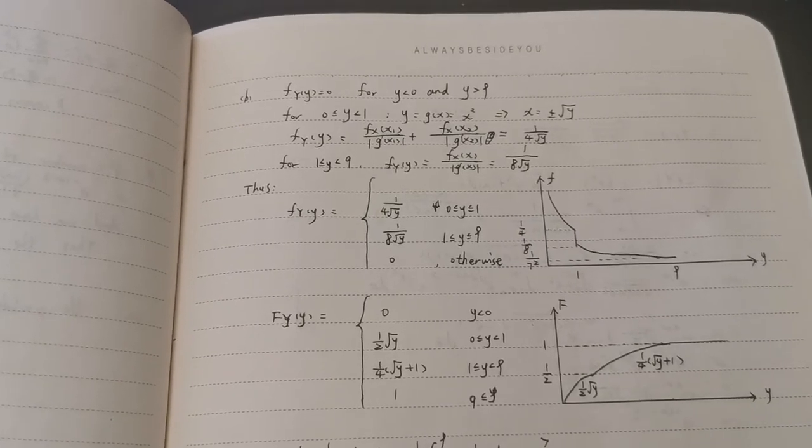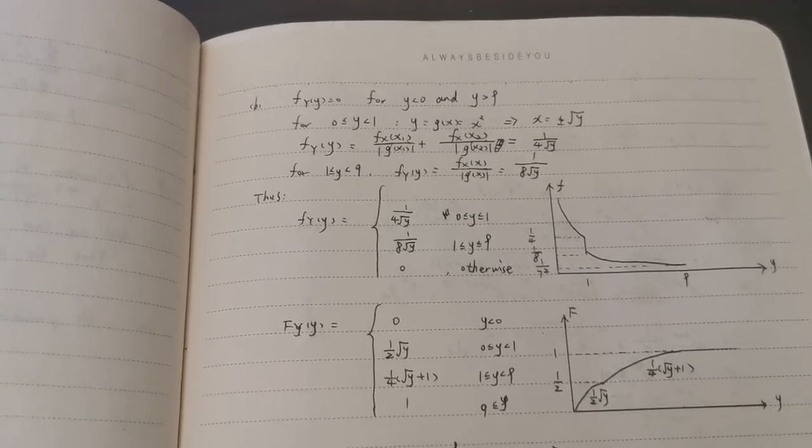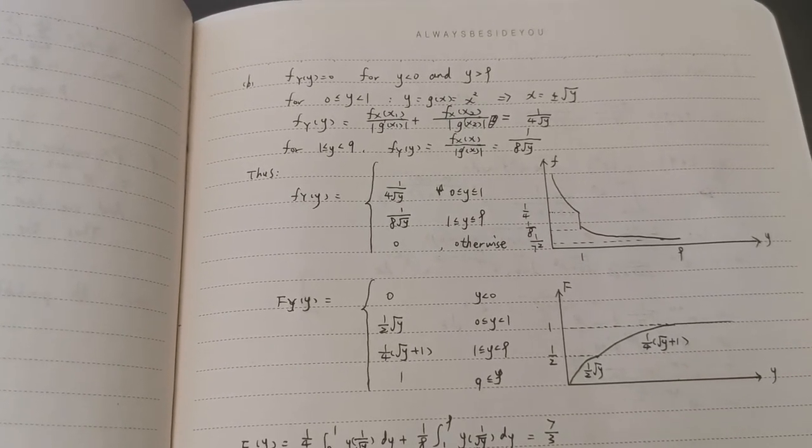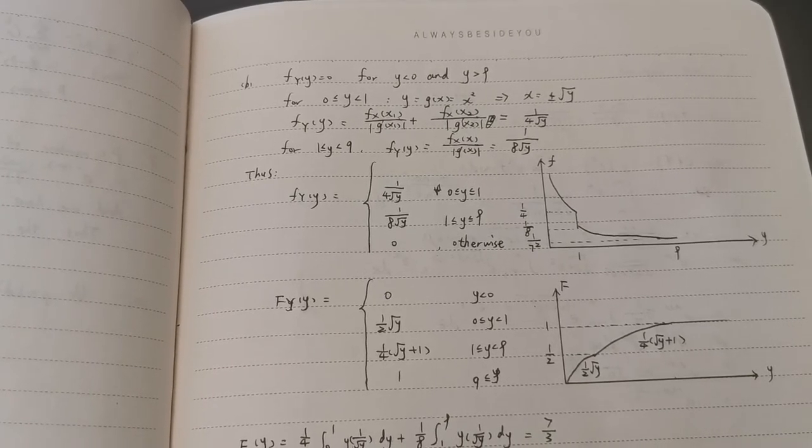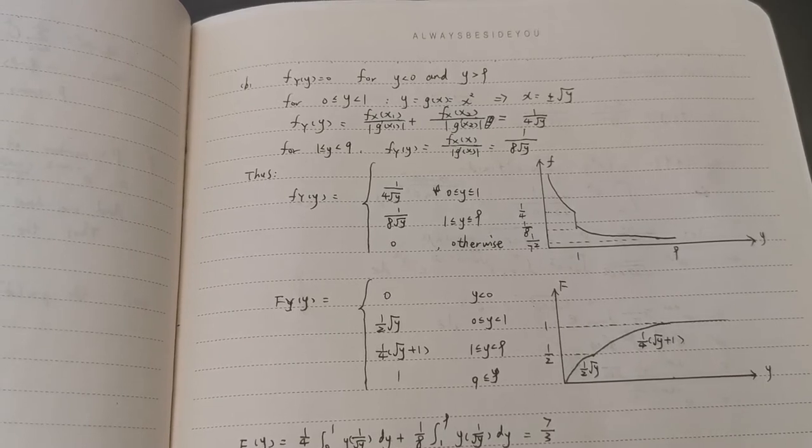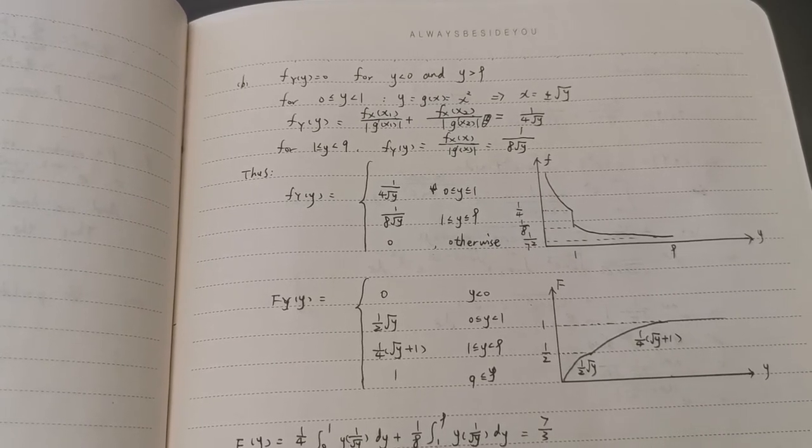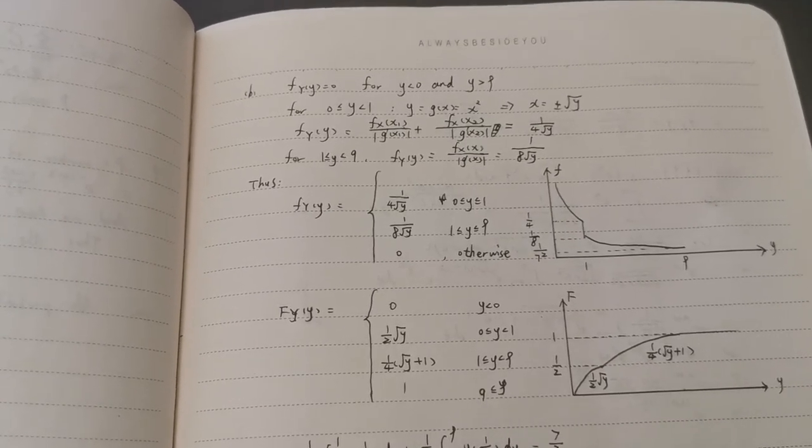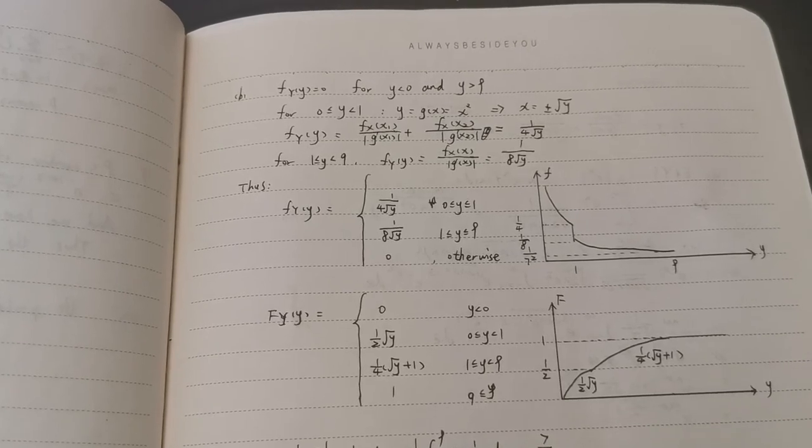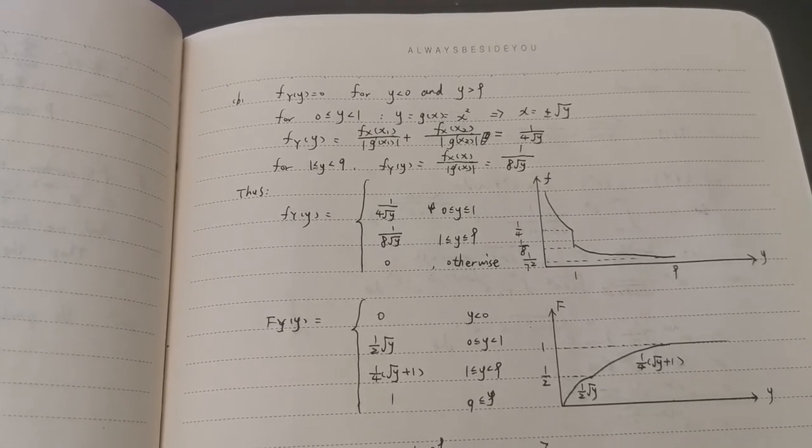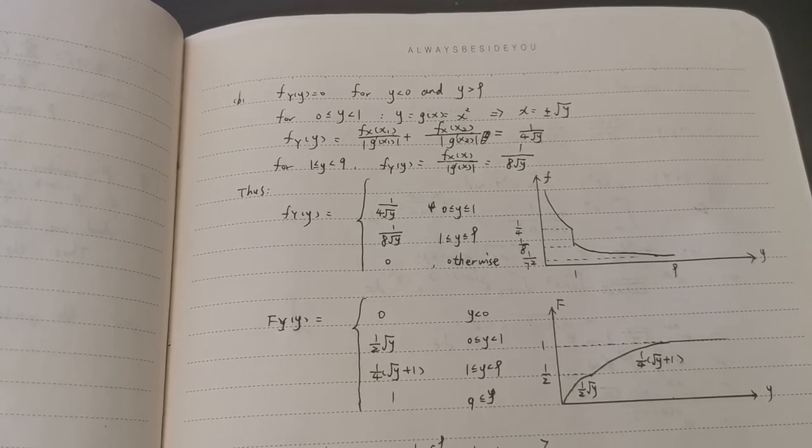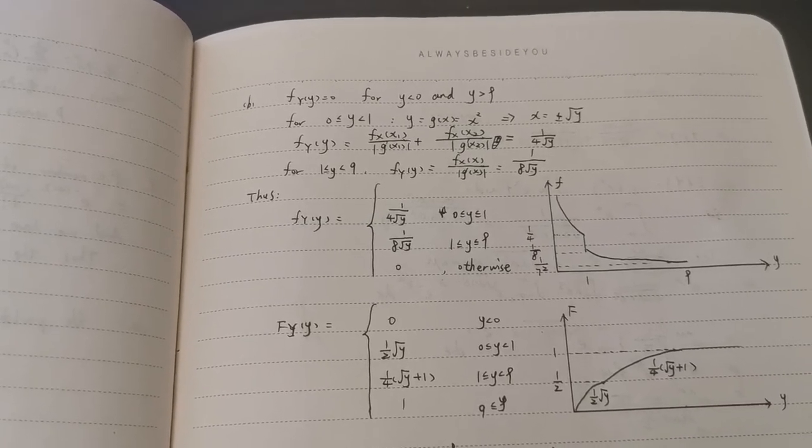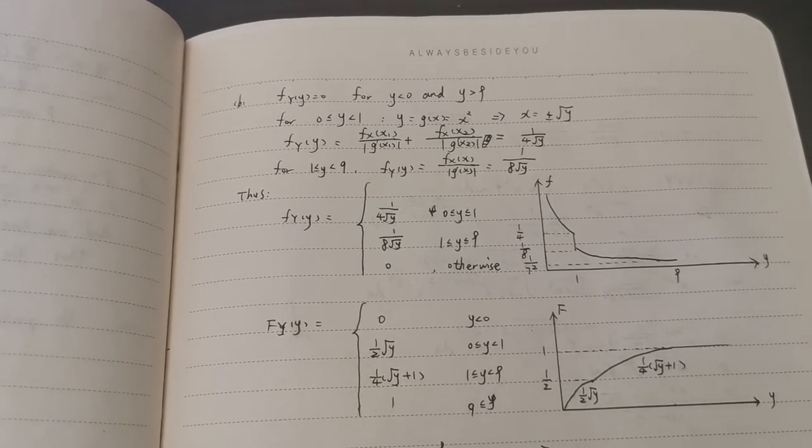And for 1 smaller than y smaller than 9, there is only one root. Thus, we can figure out lowercase fy. These functions have three statuses, which are 0 to 1, 1 to 9, and otherwise.